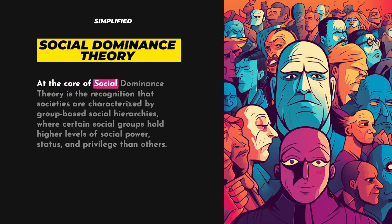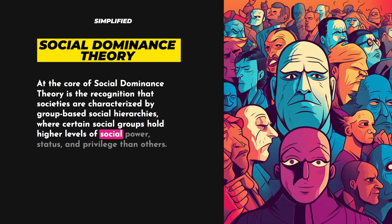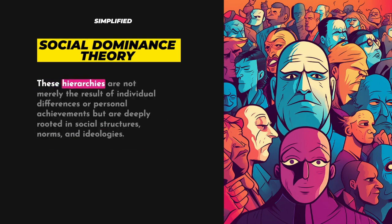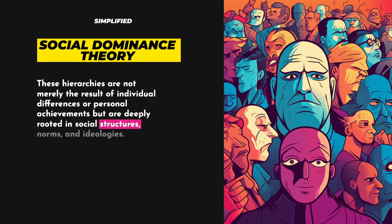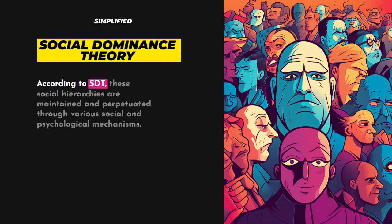At the core of Social Dominance Theory is the recognition that societies are characterized by group-based social hierarchies, where certain social groups hold higher levels of social power, status, and privilege than others. These hierarchies are not merely the result of individual differences or personal achievements, but are deeply rooted in social structures, norms, and ideologies. According to SDT, these social hierarchies are maintained and perpetuated through various social and psychological mechanisms.